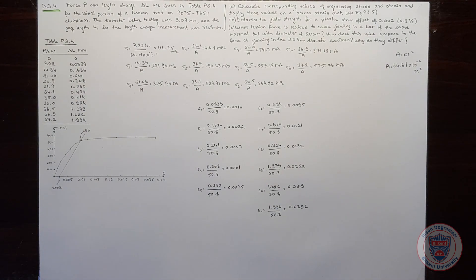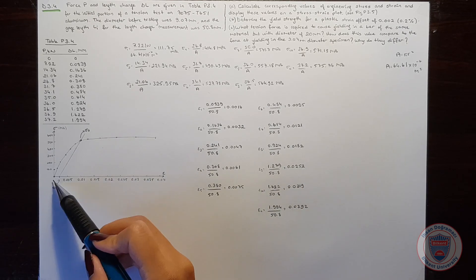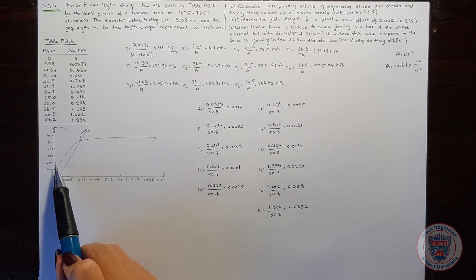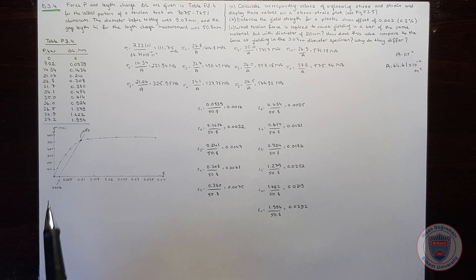We calculated the corresponding values of engineering stress and strain. Also, I already drew the stress-strain plot. You can see that when stress is zero, the strain is also zero. When the stress is 111.75 MPa, the strain becomes 0.0016. When the stress is 221.94 MPa, the strain becomes 0.0032 and it goes on.